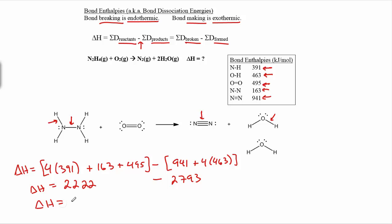If you work out the math, delta H is going to equal negative 571 kilojoules. This is a typical application of using bond enthalpies to calculate delta H.